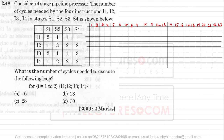Consider this question, which was asked in GATE 2009. They are saying: consider a four-stage pipeline processor. The number of cycles taken by four instructions I1, I2, I3, and I4 in stages S1, S2, S3, S4 is given. Instruction I1 takes two clock cycles in S1, one clock cycle in S2, one clock cycle in S3, and four clock cycles in S4.